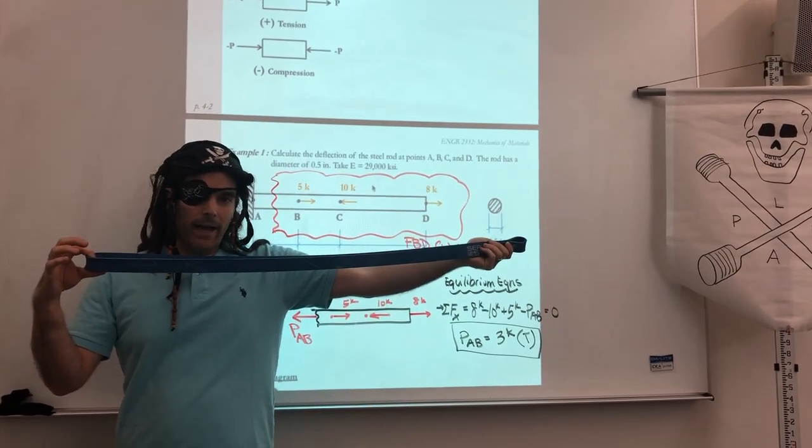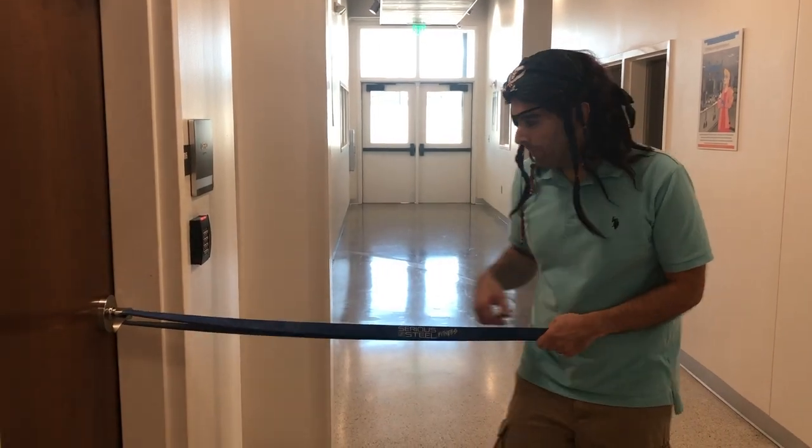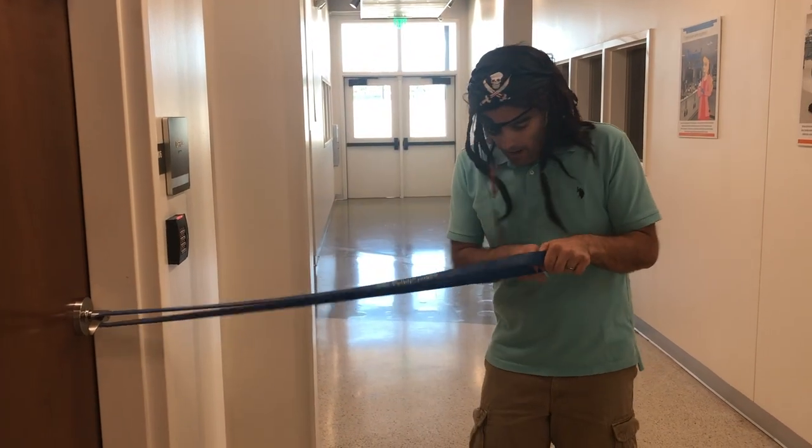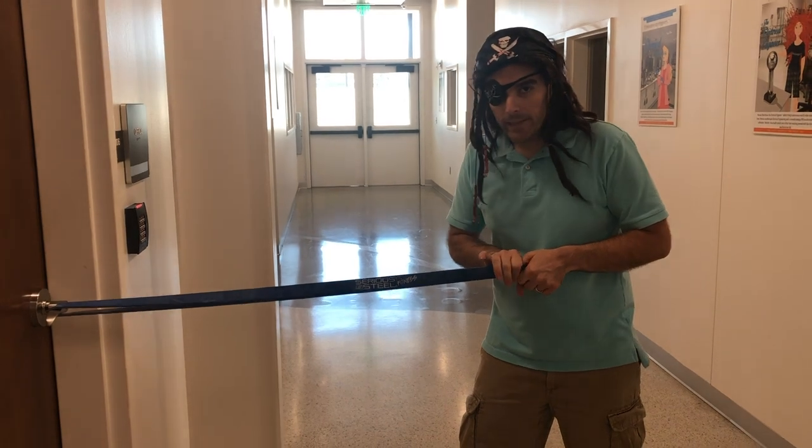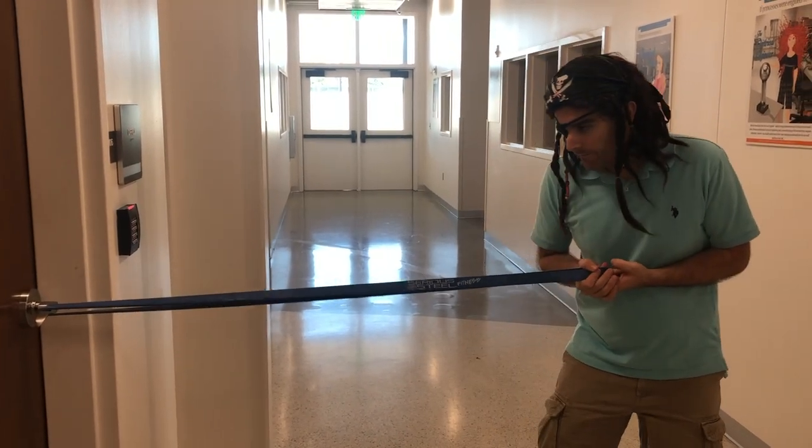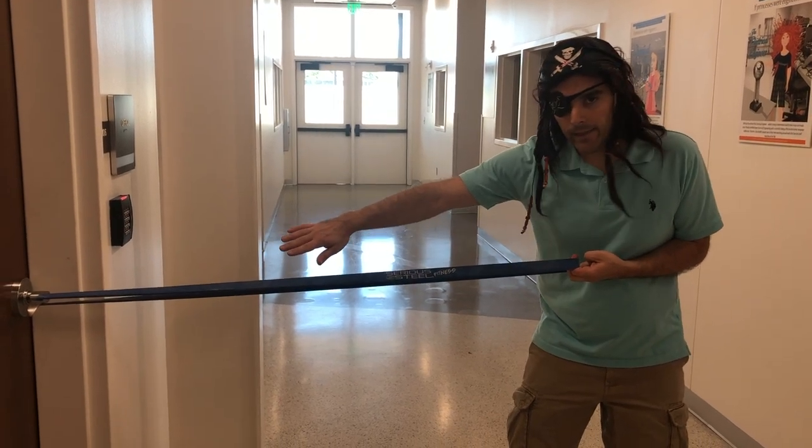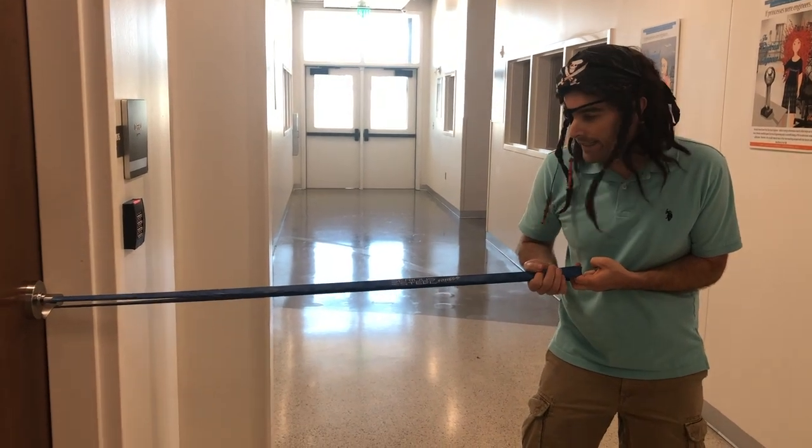So it seems like maybe we can model this problem with this band. So let's go ahead and see if we can do that. So if we take a look at our example problem, here I fixed my band at point A. And then I'll represent the eight kips of force at point D over here. If we only had the load at point D, we would know that the axial force all along the length was eight kips in tension. So I think we can see that.